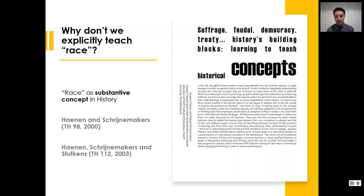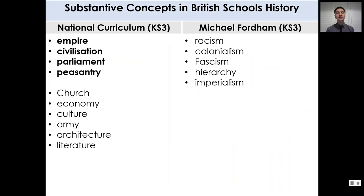Race as a substantive concept underpins understanding and analysis of historical events and developments. Over the last few decades, there's been growing interest in instructing students explicitly in substantive concepts. Two foundational articles published in the Teaching History Journal by Heinen, Srinemachers and Stufkens — Dutch teacher trainers — argued very clearly that students should have substantive concepts explicitly unpacked and taught in order to access the curriculum, develop historical understanding, and critically engage with the wider world. Substantive concepts underpin a lot of our thinking about history in Britain. The National Curriculum in England for History at Key Stage 3 explicitly names a number of concepts such as empire, civilisation, parliament, and peasantry.